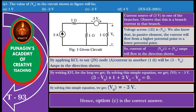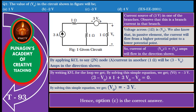We find that the voltage across the 1 ohm resistor is V0. We also know that in a passive element, the current will flow from a higher potential point to a lower potential point. So a current of V0 divided by 1 ohm — equal to V0 amperes — will flow in the direction shown. By applying KCL to junction node A,